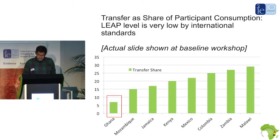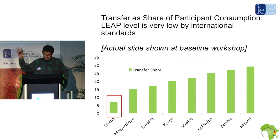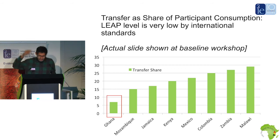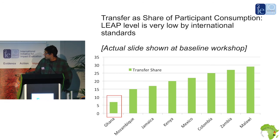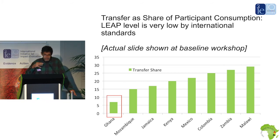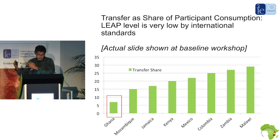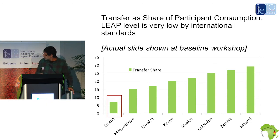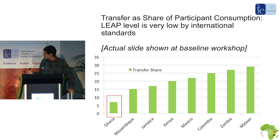Going back into the archives, this was literally the PowerPoint shown at the 2011 baseline workshop in Akosombo. We showed that the LEAP program's transfer share in Ghana was around 7% of beneficiary consumption, compared to PROGRESA in Mexico at about 23% and Colombia at around 25%. We said there's no way this program is going to have an impact because the transfer is just too low. Based on that graph, the transfer value was tripled in the country — just based on the baseline results. We didn't have to wait two years; we had rich baseline information and we used it.